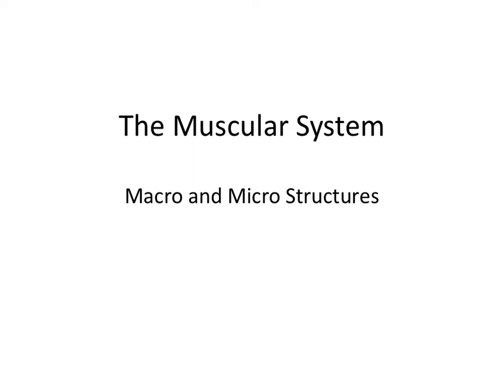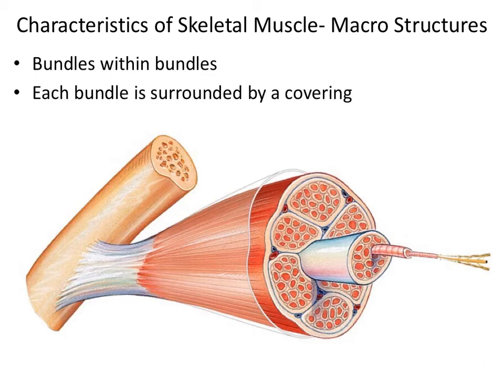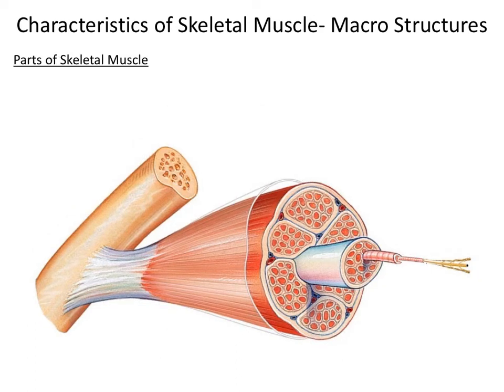For this section of the muscular system, we're going to talk about the macro and micro structures of skeletal muscles. When looking at skeletal muscles, you need to think of skeletal muscles as bundles of bundles of bundles, and that each bundle is surrounded by a connective tissue covering. First, we're going to take a look at the macro structures of skeletal muscles.